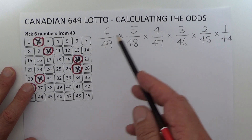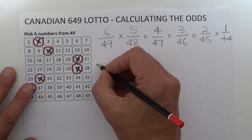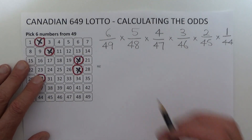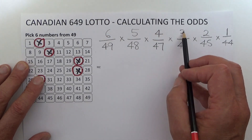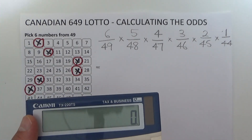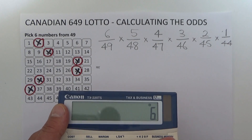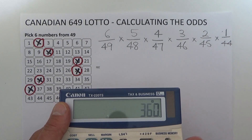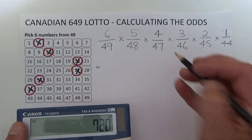To make more sense of those odds, we're going to multiply them out. We'll multiply the top row first: six times five times four times three times two times one. Putting those into the calculator: 6 × 5 × 4 × 3 × 2 × 1 equals 720.